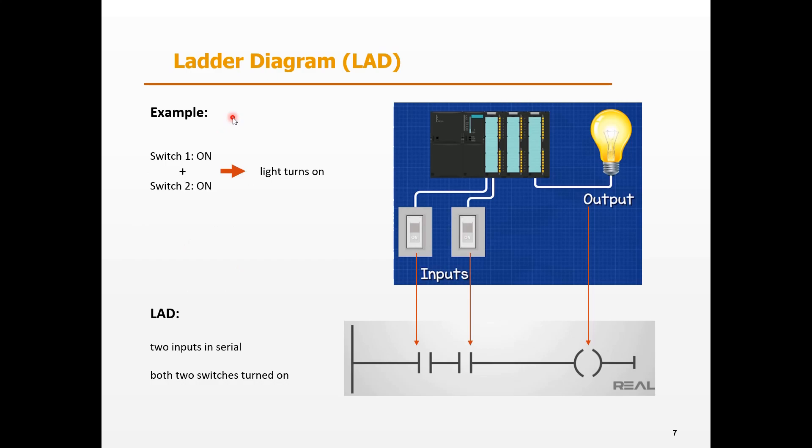Here is a simple example of LAD. The light is controlled by two switches. When both two switches are turned on, the light is turned on. In LAD, the switches are inputs and the light is output. We program the two inputs in serial, which means both two switches need to be turned on. Then the output signal can be triggered.